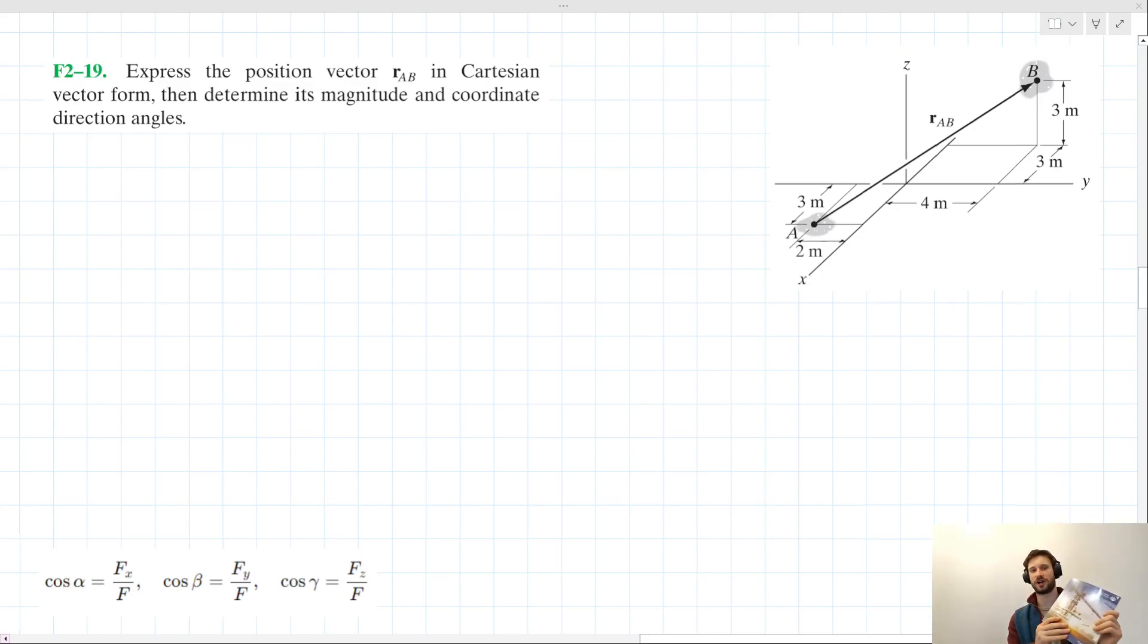Hello and welcome to this video tutorial for R.C. Hibbler's Engineering Mechanics Statics. We have this problem from chapter 2 which is asking to express the position vector r_AB in Cartesian vector form, then determine its magnitude and coordinate direction angles.